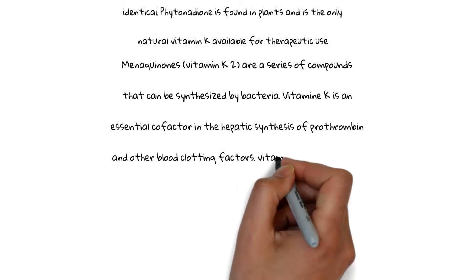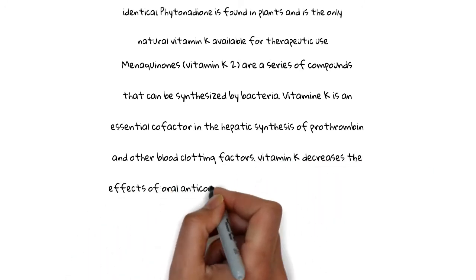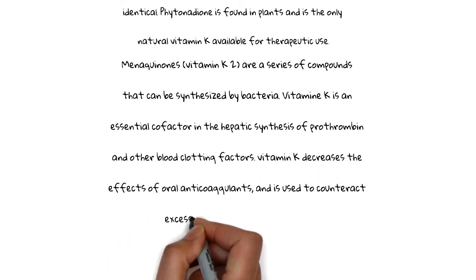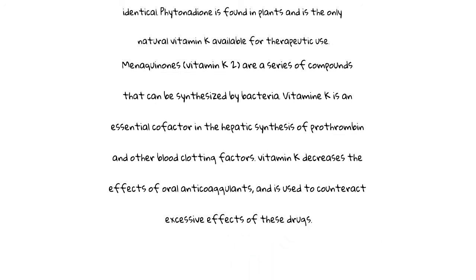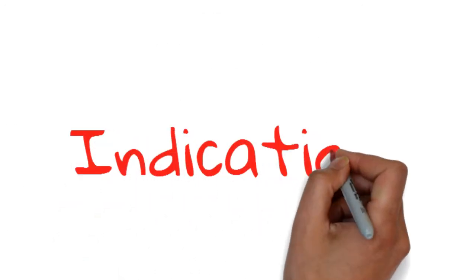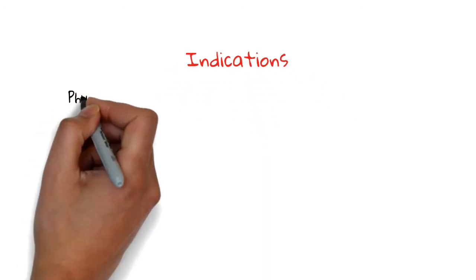Vitamin K is an essential co-factor in hepatic synthesis of prothrombin and other blood clotting factors. Vitamin K decreases the effect of oral anticoagulants and is used to counteract excessive effects of these drugs. Now come to its indications.